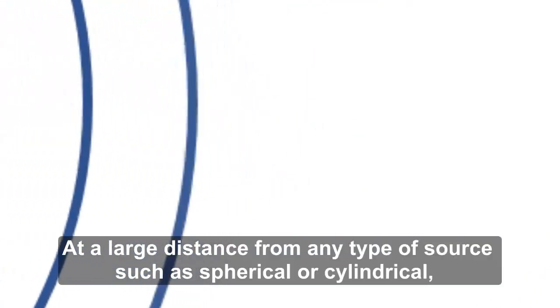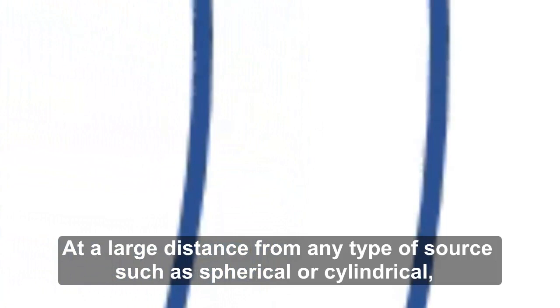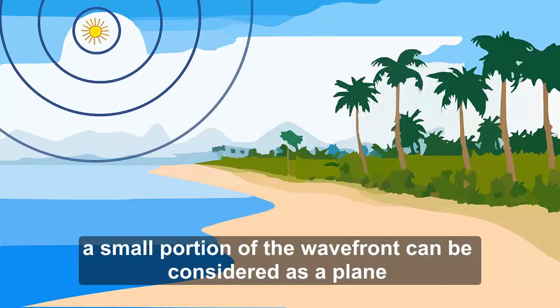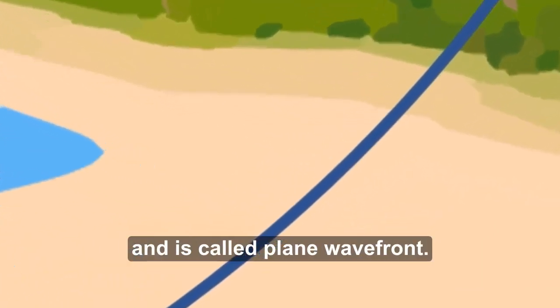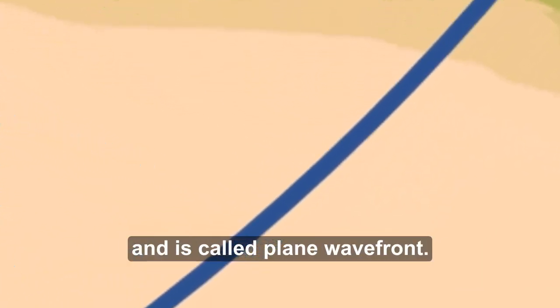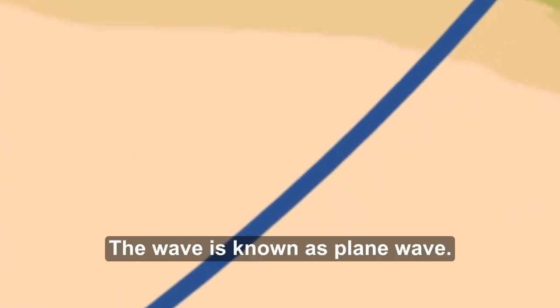At a larger distance from any type of source, such as spherical or cylindrical, a small portion of the wavefront can be considered as a plane and is called a plane wavefront. The wave is known as a plane wave.